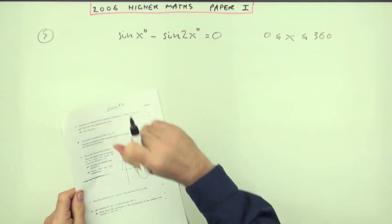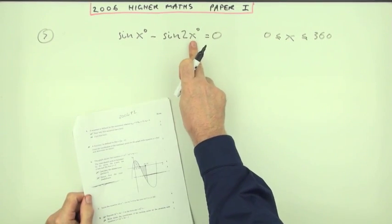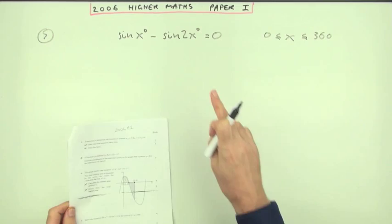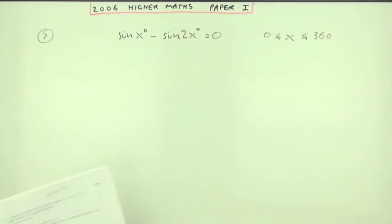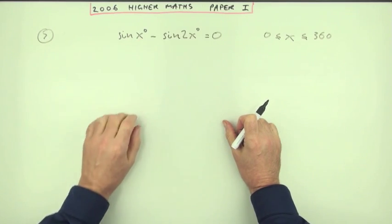Number seven from the 2006 Higher Maths Paper One. Double angle formula, 2x, single x, double angle equation, four marks. One nuisance is this business about it being in degrees.